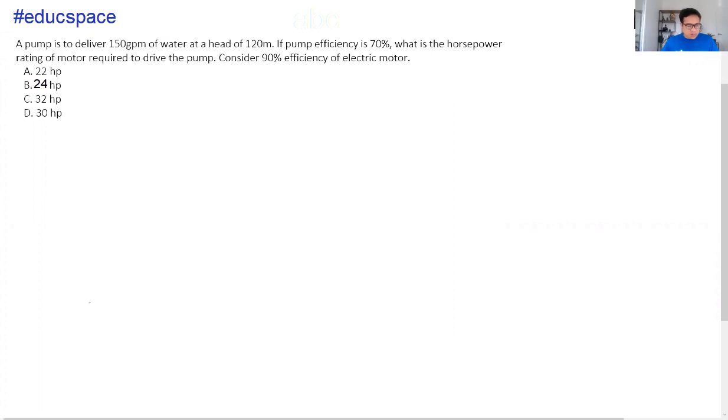So we have this problem number one that says a pump is to deliver 150 gallons per minute of water at a head of 120 meters. If pump efficiency is 70%, what is the horsepower rating of motor required to drive the pump? Consider 90% efficiency of electric motor. So this is a very common problem. May required na GPM, there's a given head, so calculated head na yan. And then pump efficiency is considered 70% which is a very common range of efficiency for pumps and typical machines including fans and compressors. And then 90% efficiency for electric motor.